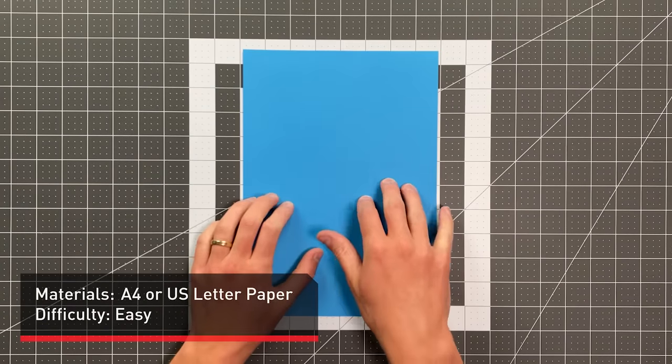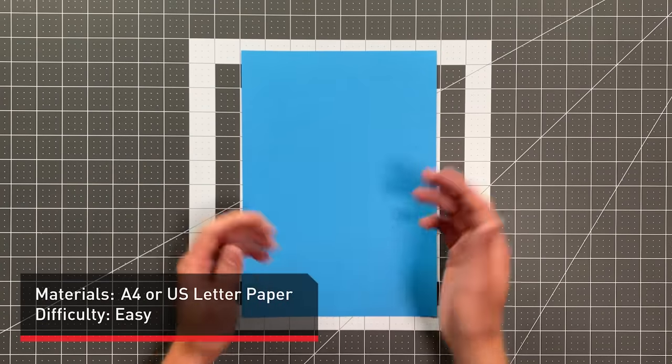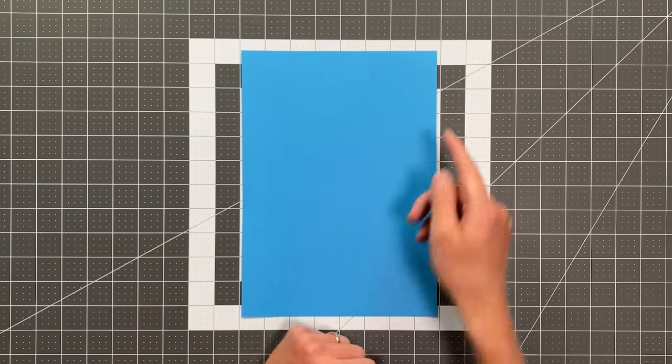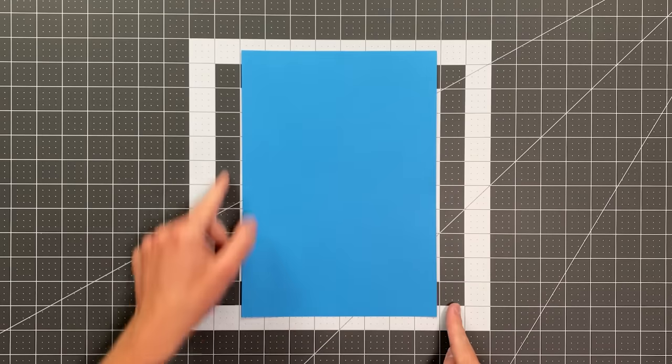All you'll need in order to fold this plane is a sheet of A4 paper or 8.5 by 11 inch paper, and we're going to begin by folding this edge here to this edge.